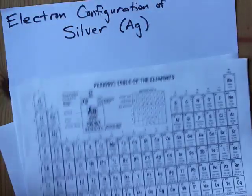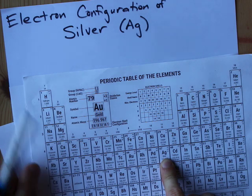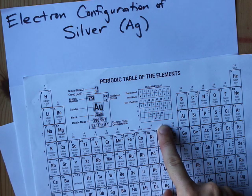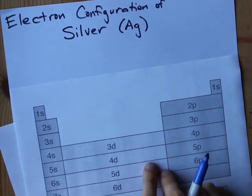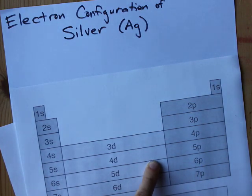Now silver on the periodic table is here, in the fifth row. And it's column 11, or group 11 if you're into that. So I have to get all the way up to about here, in the fifth row.